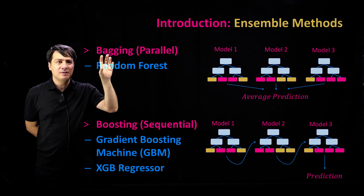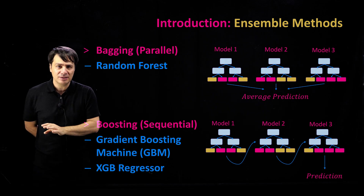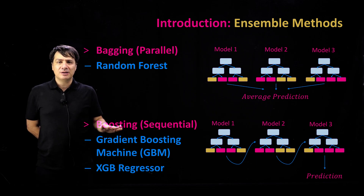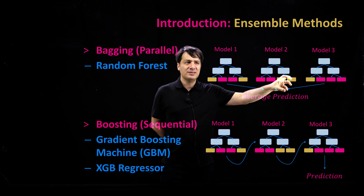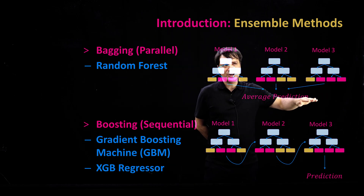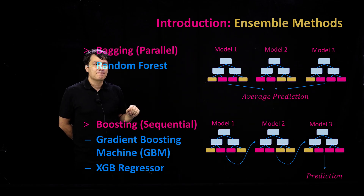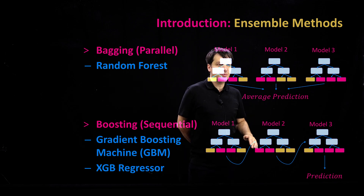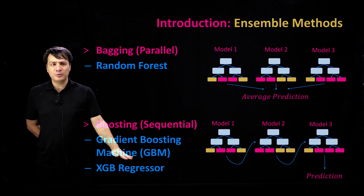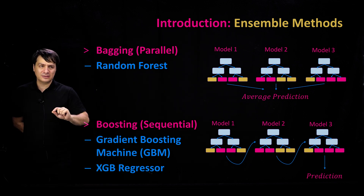There are two types of ensemble methods, and we're going to use them in the 3D printing case study. In the bagging approach, you get a bunch of baseline decision trees, each predicting an outcome, and you do an average prediction — sometimes giving higher accuracy than a single tree. In the boosting approach, you train a decision tree model and then step-by-step improve its accuracy. We're going to use two types of boosting methods: gradient boosting machine and XGB regressor.